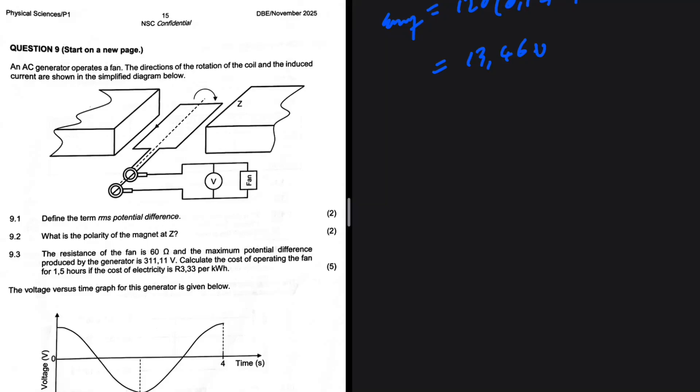Question 9.2: What is the polarity of the magnet at z? Which hand rule are we using? Let me know in the comments what your answer to this question is.